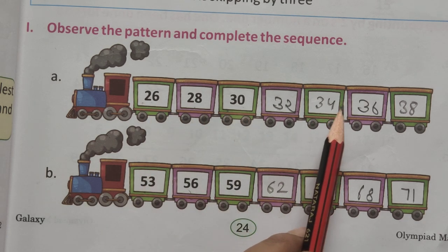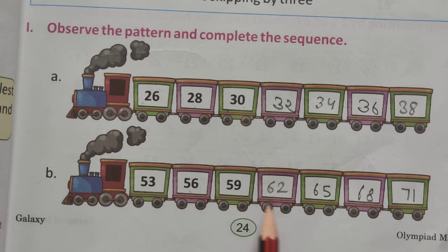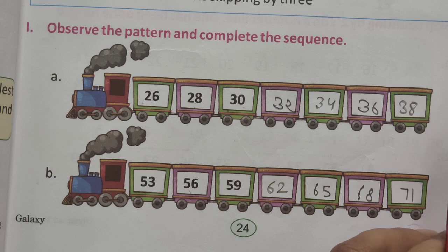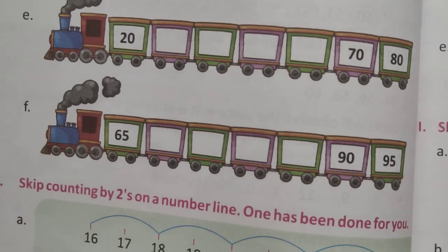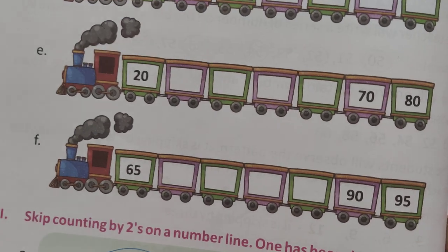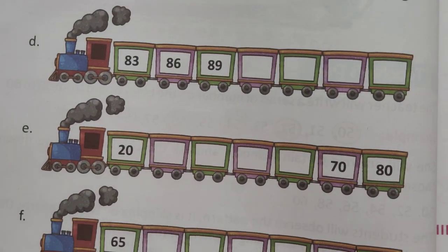Is that clear? This line is by skip two number, and this line is skipped by three number. Is that clear, all of you? Next one is,